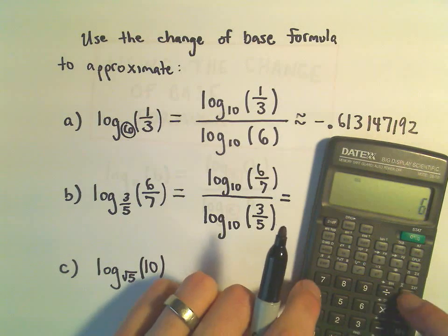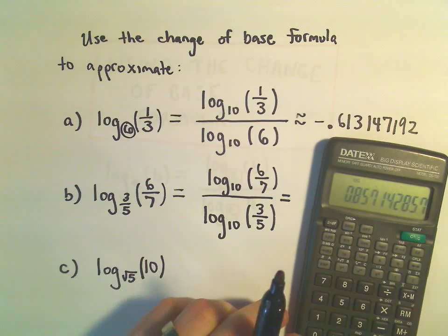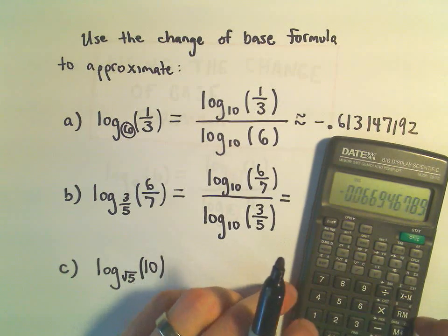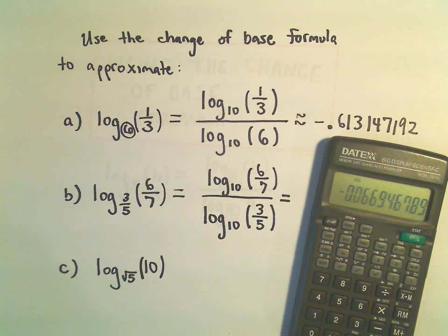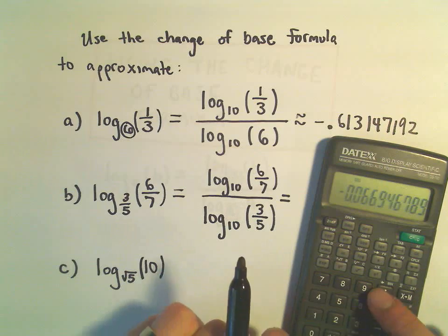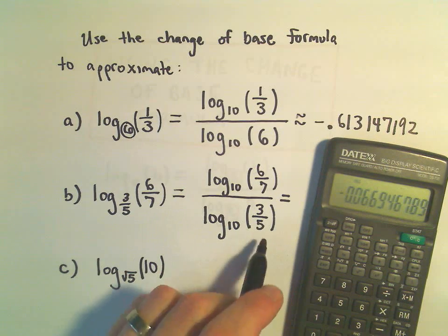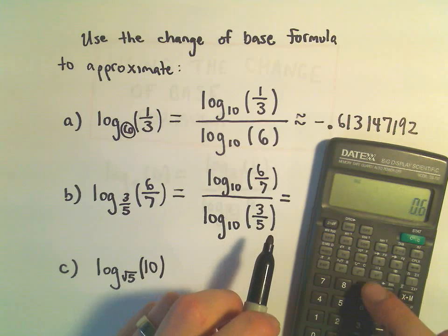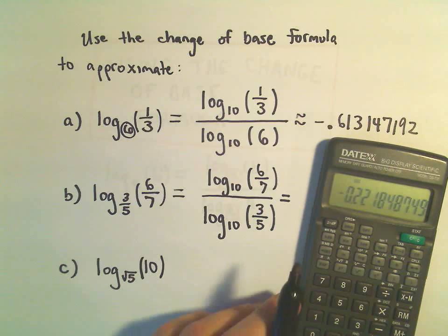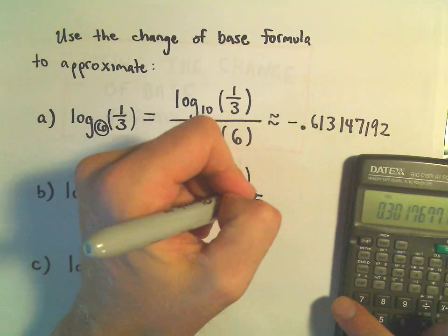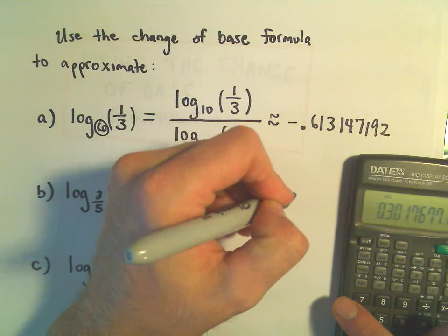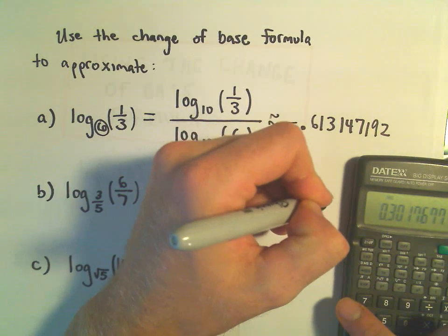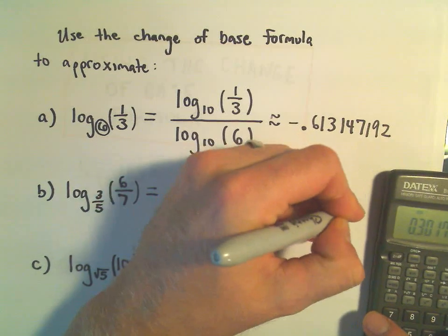So let's see, 6 divided by 7. If I do the logarithm of that, that would be the value in the numerator, negative 0.66946789. I'm going to divide that by, so 3/5 is going to be 0.6. So I'm going to take 0.6, put that inside my logarithm, hit my equal sign so it does the division. And I'm getting 0.301767712.